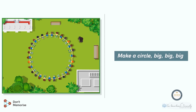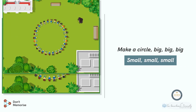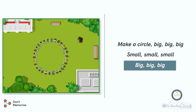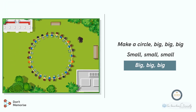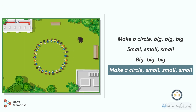Make a circle, big, big, big — enact this by joining hands and making a big circle. Small, small, small — join hands and come closer forming a small circle. Big, big, big — join hands and make a big circle again. Make a circle, small, small, small — joining hands, let's make a small circle.